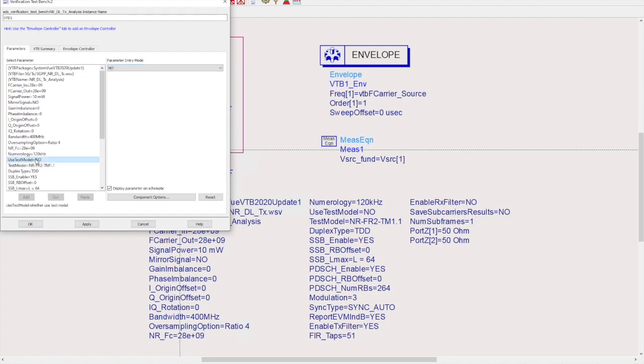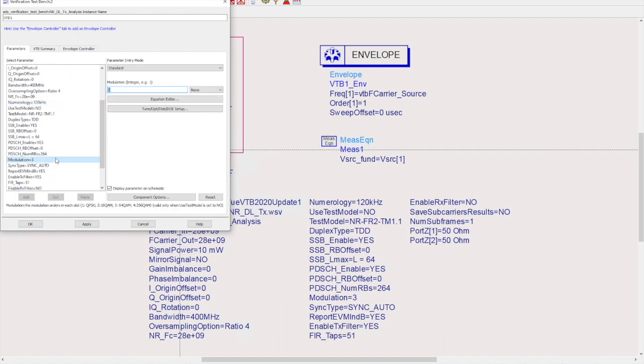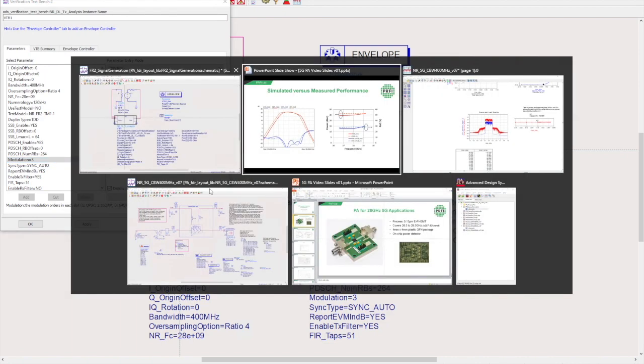Alternatively we can set the used test model to no and define our own signal. Here we can specify the sub-carrier spacing, the modulation type and many other parameters.